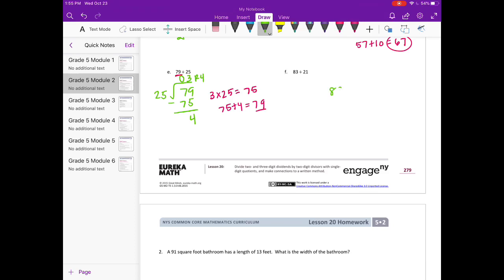F, 83 divided by 21. So 21 can't go into 8, but 21 could go into 83. Let's see. If I tried 21 times 4, that's going to be too big because that's 84. So it can probably only go in 3 times, which is 63. 21 times 3 is 63. So we get 3 remainder 20.